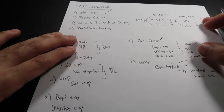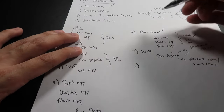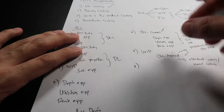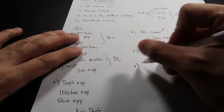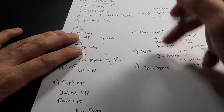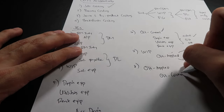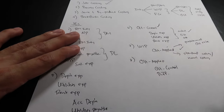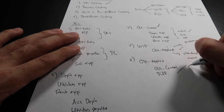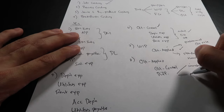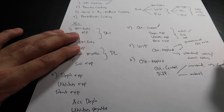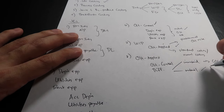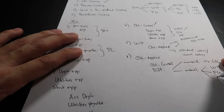At the end of the year, OH Control and OH Applied will differ because one is actual and the other is standard. We close them: debit OH Applied, credit OH Control. Their difference is treated as follows — if immaterial, charge the difference to cost of goods sold; if material, allocate the difference to work in process, finished goods, and cost of goods sold.